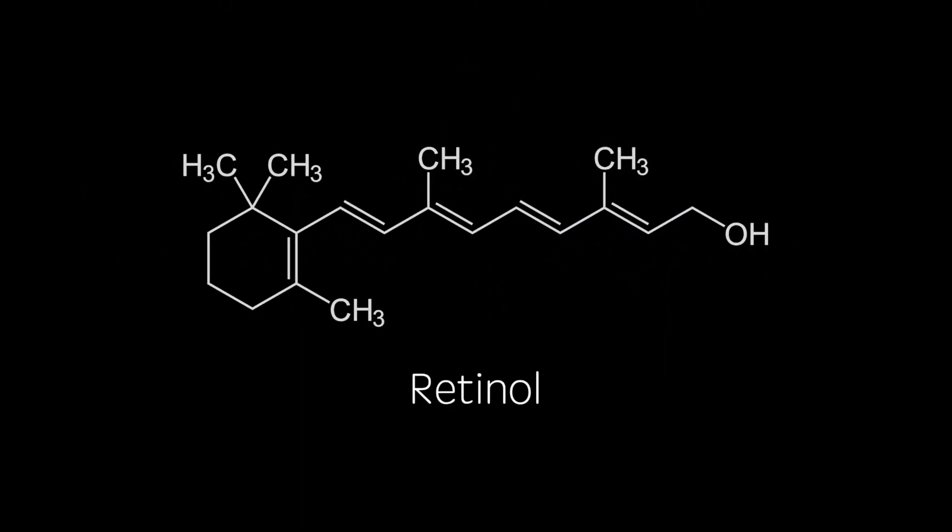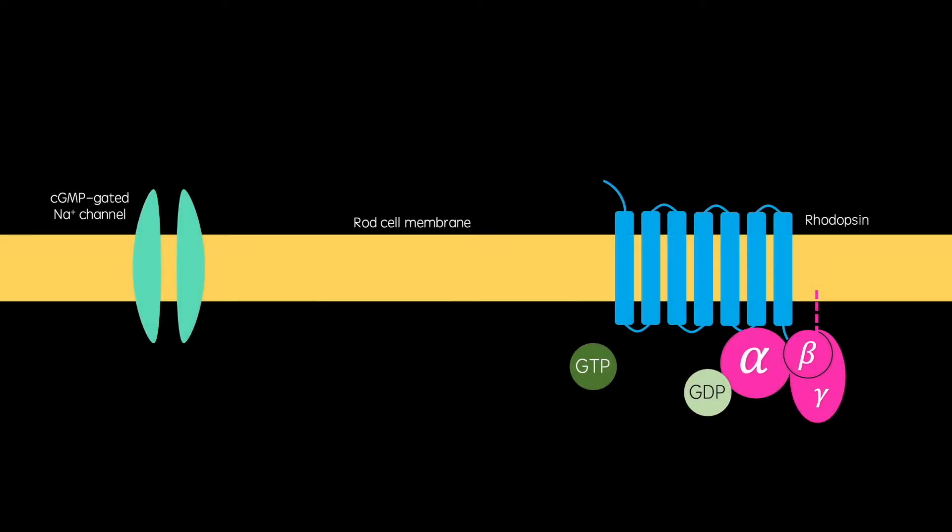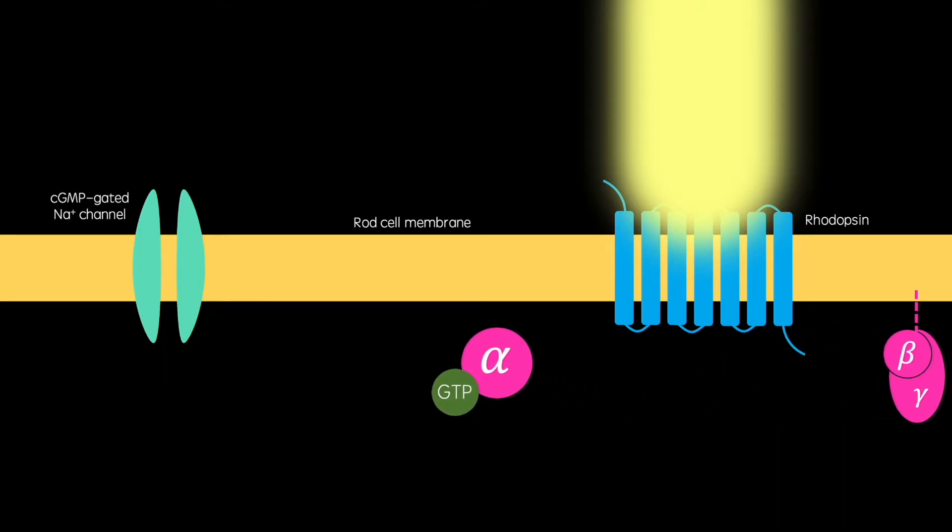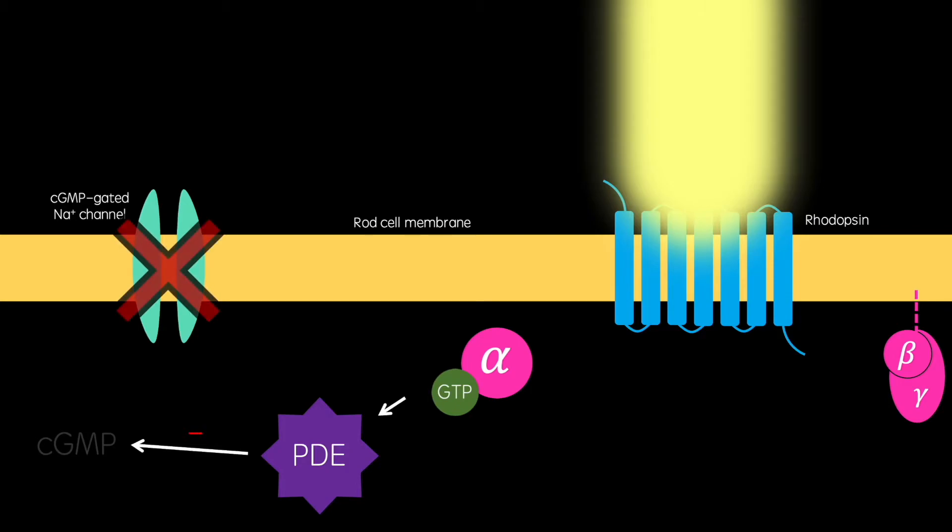The main function of retinol in the body is in rhodopsin molecules in cell membranes of retinol rod cells in the eye. Rhodopsin is a G-protein coupled receptor, and when it is exposed to light, its retinol molecule is converted to all trans-retinal, which allows the alpha subunit of the G-protein to dissociate. This then activates phosphodiesterase molecules, which breaks down cyclic GMP. This closes CGMP-gated sodium channels, which causes the cell membrane to hyperpolarise. This information is used by the brain to put together an image. For this reason, vitamin A is vital for good vision.